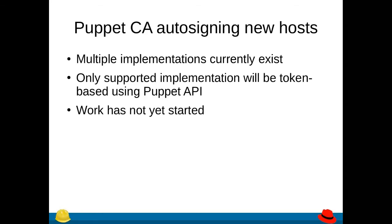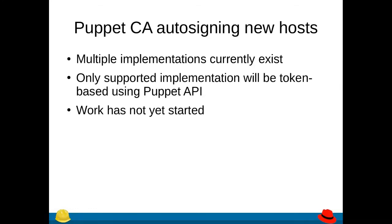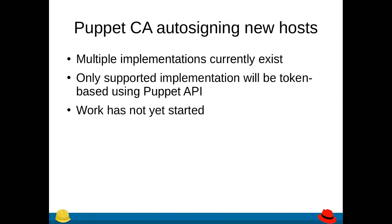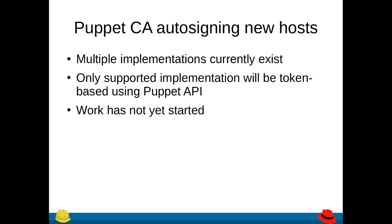The next point is the Puppet CA auto-signing for new hosts. If you've provisioned a host in Foreman and you have Puppet CA set up, you know there are multiple ways to get the Puppet CA to auto-sign the new host you've just provisioned. A lot of these implementations are available, but that means getting it set up properly and supported is difficult, and some of these workflows are better than others. We are going to be focusing on just one supported implementation, which is going to be the token-based one, and it will use the Puppet API available in Puppet 6 and later. Work on this still hasn't started, so if you're interested, please feel free to reach out.